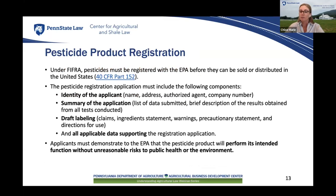Under FIFRA, to register a pesticide, the applicant must provide administrative information and scientific data, including the applicant's identity, name, address, authorized agent if any, company number, a summary of the application with a list of all data submitted, a brief description of test results, a draft label with claims — statements that the pesticide can or should be used to prevent or destroy a specific pest — ingredient statements, warnings, precautionary statements, and directions for use, as well as all applicable data required to support the registration application.